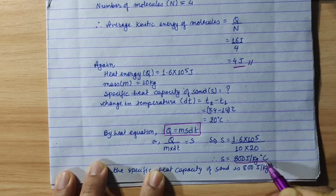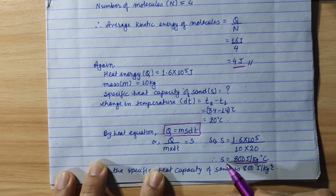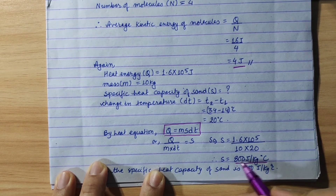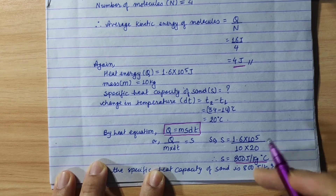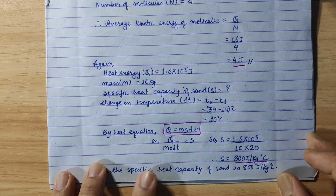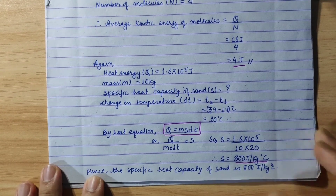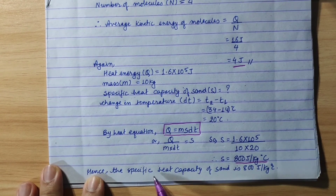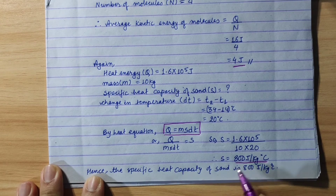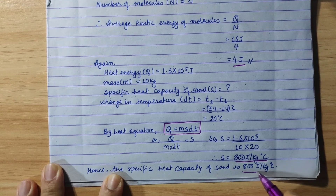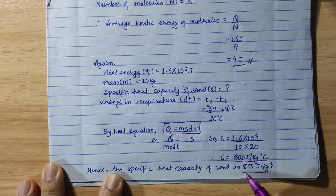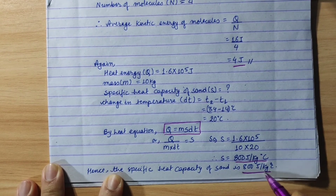The specific heat capacity of sand is 800 joules per kg per degree Celsius. So, as a conclusion, the specific heat capacity of sand is 800 joules per kg per degree Celsius.